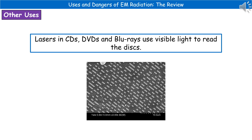Another use of EM radiation is with CDs, DVDs, Blu-rays, etc. These use visible light in the form of a laser to read the disc. On the surface of the disc you can see there are little pits — small holes etched into the surface. As the disc spins and the laser shines on it, when the laser hits a pit it no longer reflects, producing a series of pulses. That series of pulses then tells the TV what to play.